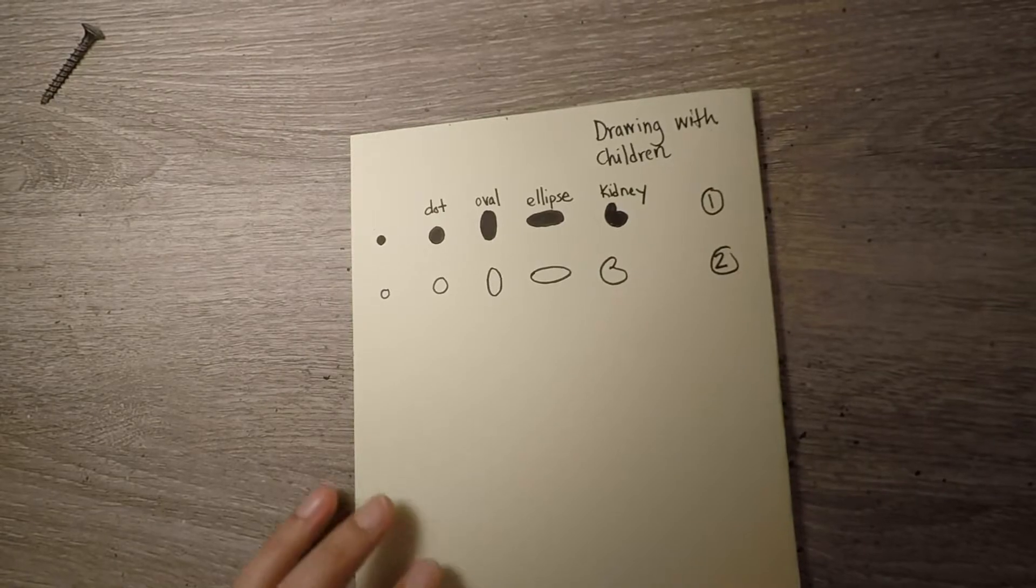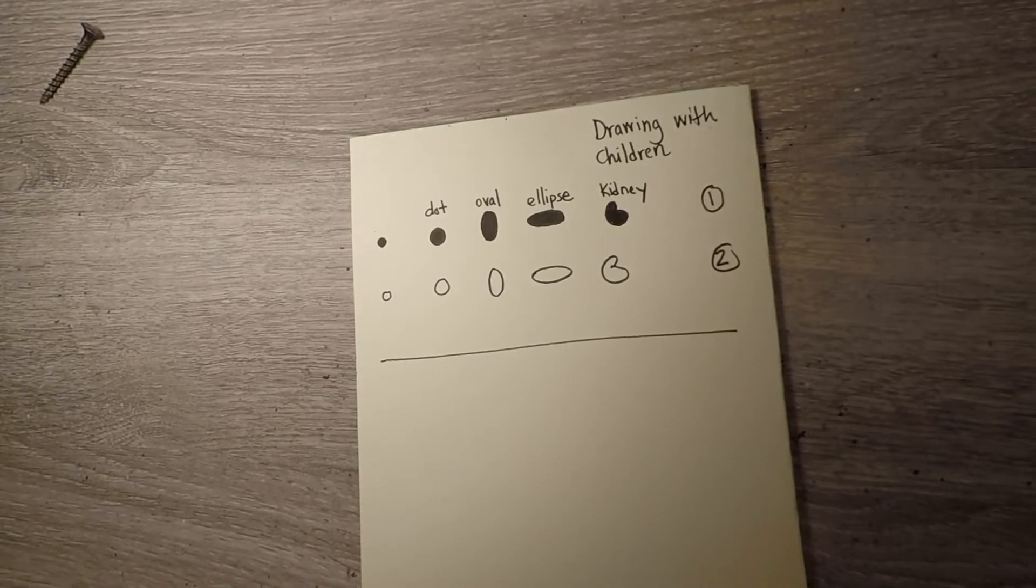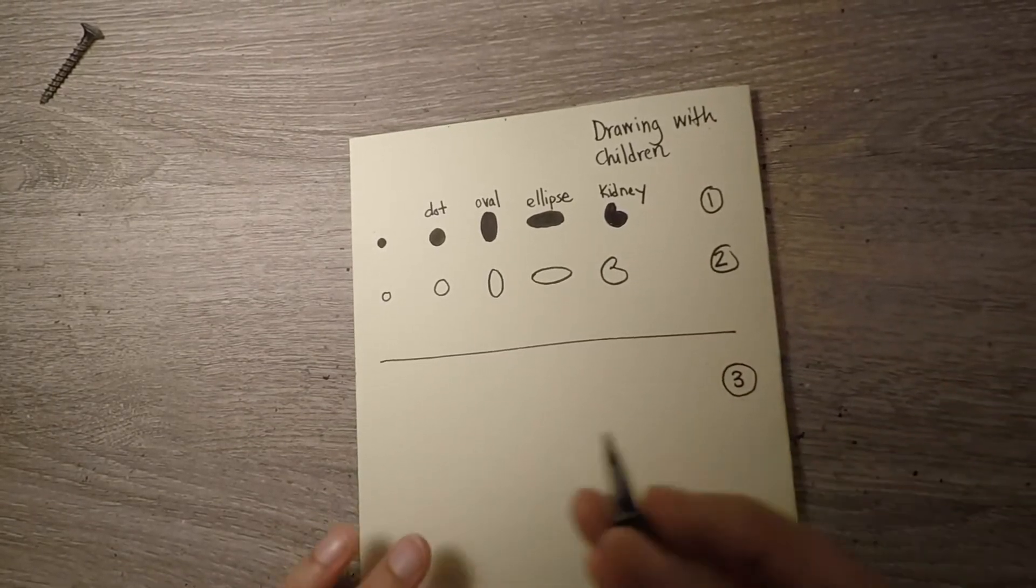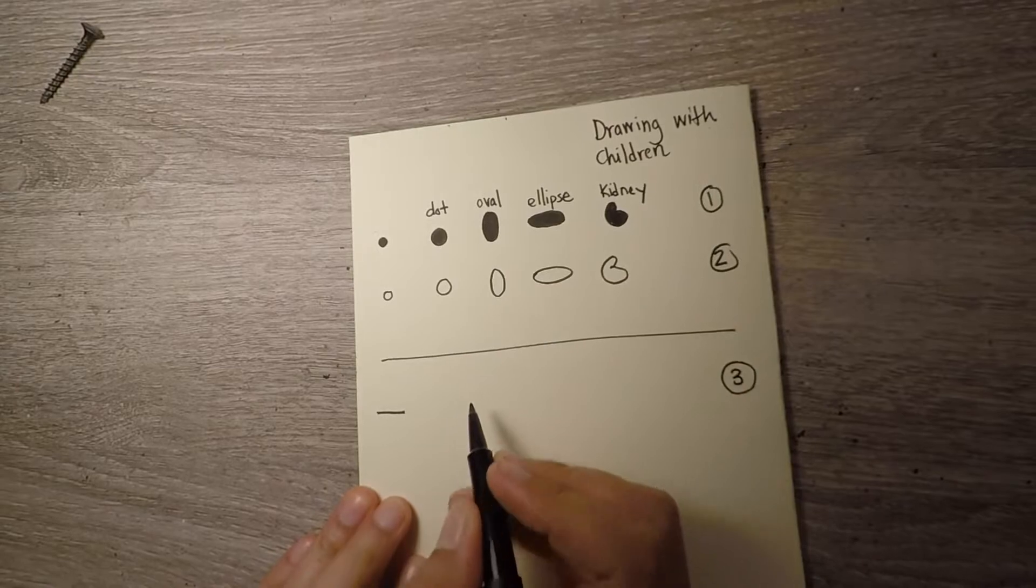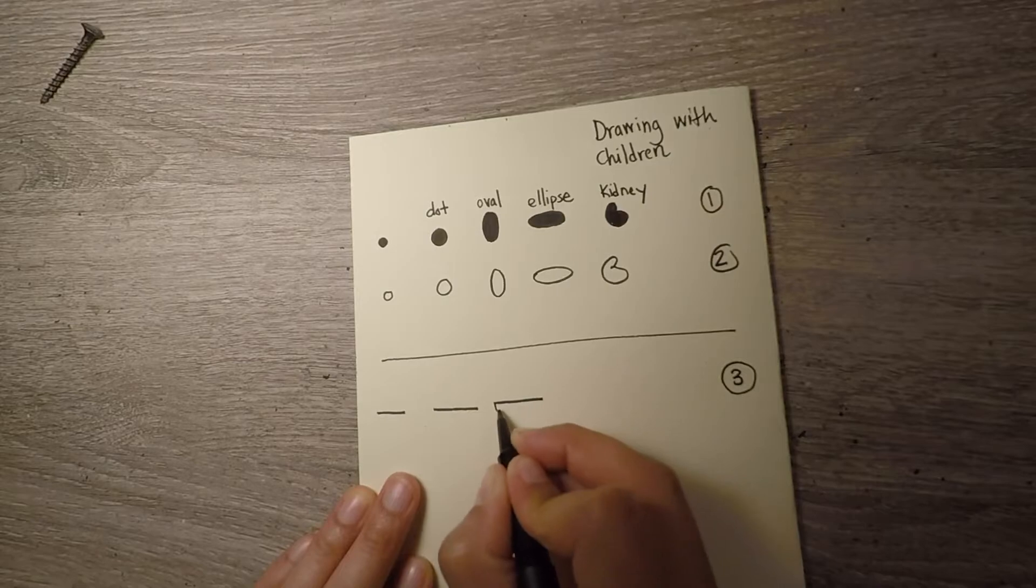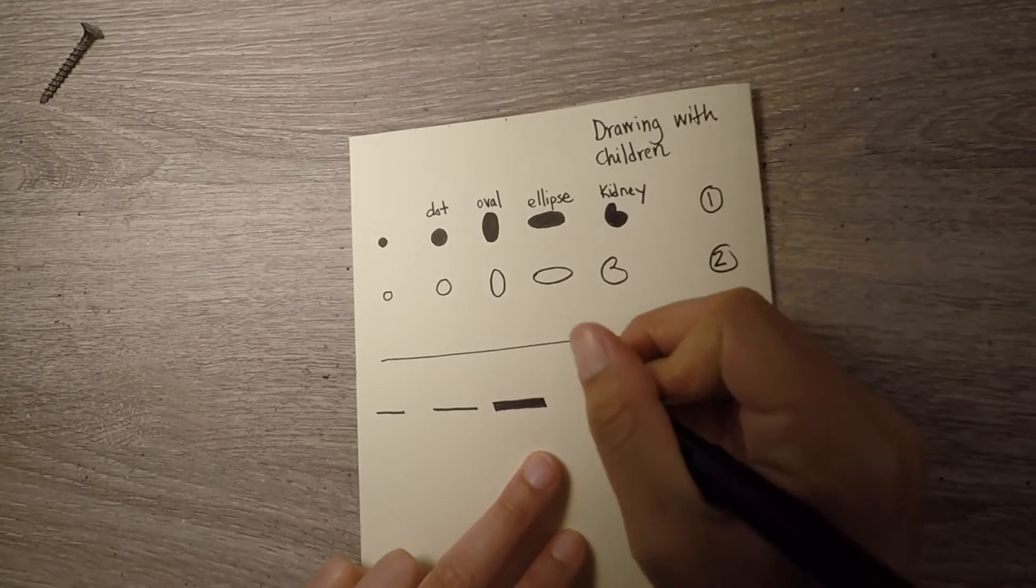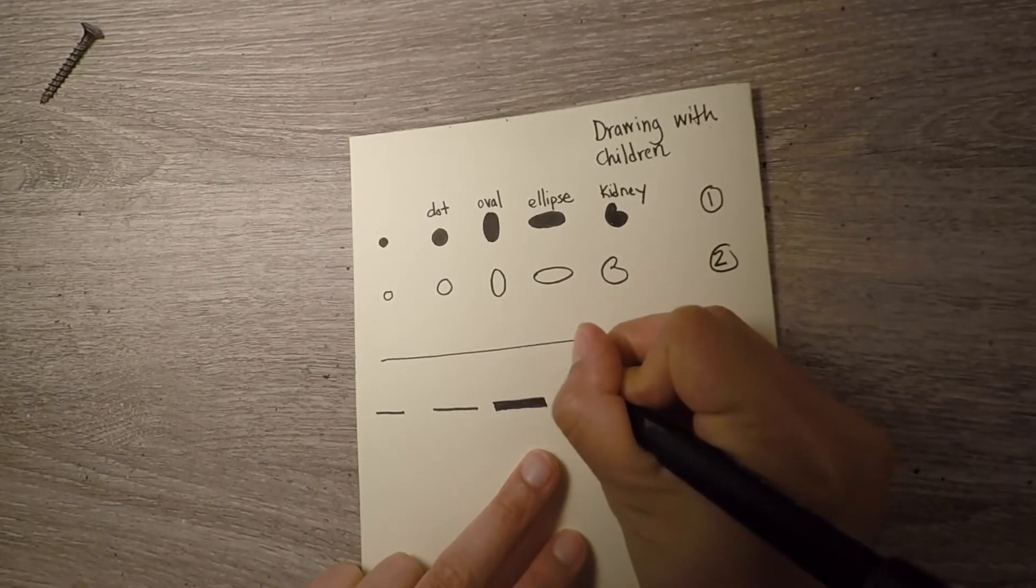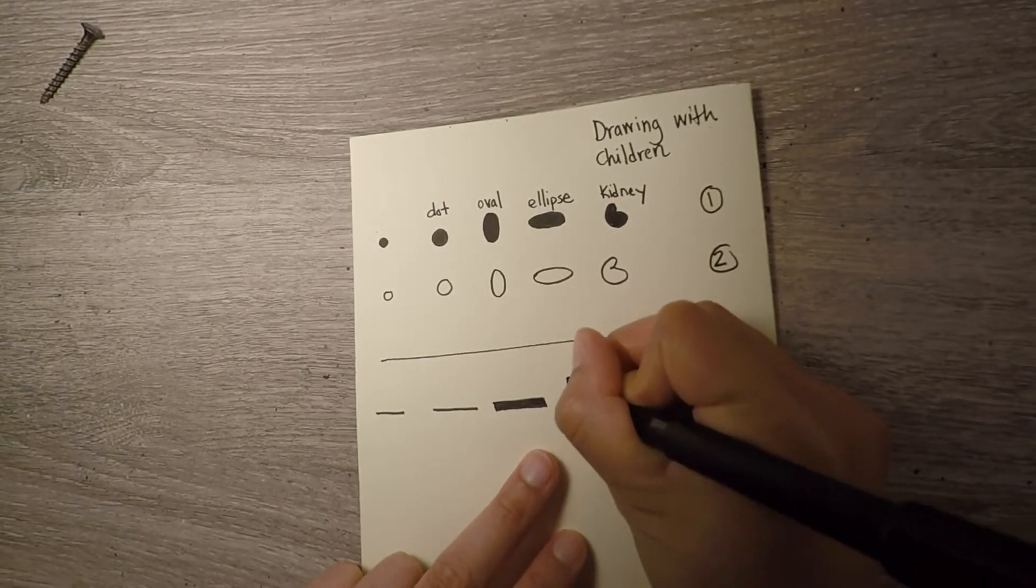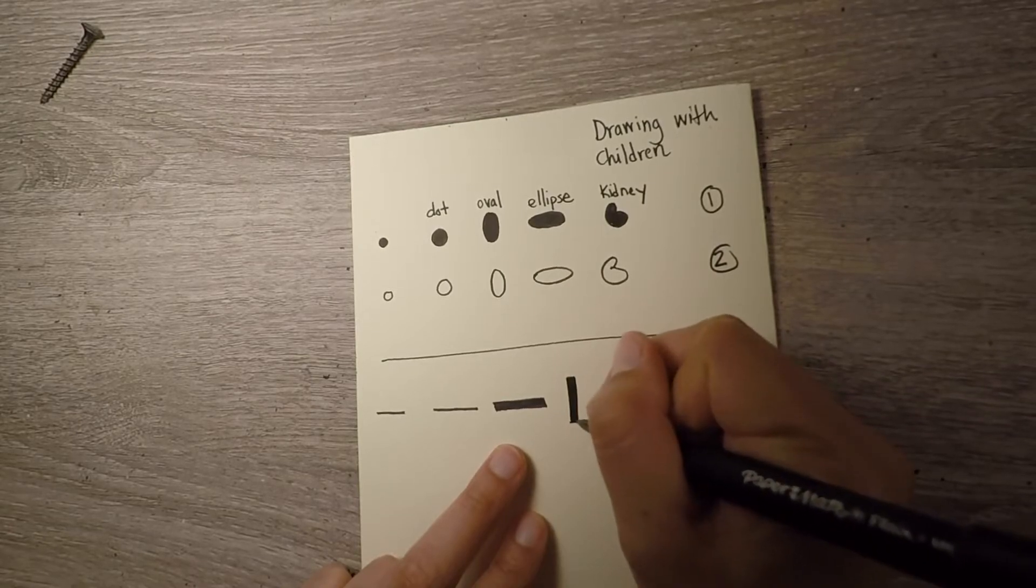And then the other three families are a little bit different because they're more focused on line work. So we have the straight family, which is basically a line. So you can have a straight line, a thicker straight line, a vertical thick straight line. So you would call this one a horizontal thick straight line, a vertical thick straight line.